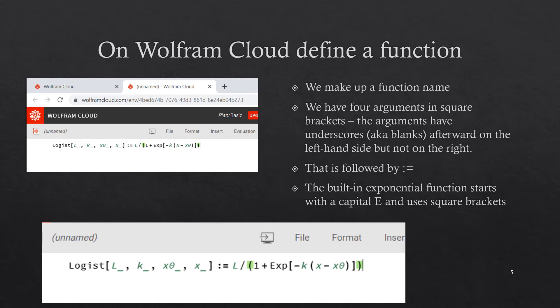So capital E x p square bracket. The arguments of the exponential are minus k times parentheses x minus x0. So again we have l divided by open parenthesis, 1 plus capital E x p square bracket, minus k, open parenthesis, x minus x0, close parenthesis, close the square bracket of the exponential function, then another parenthesis for the whole denominator.